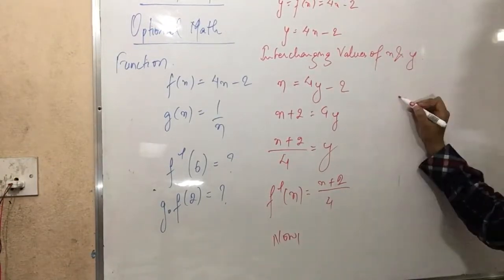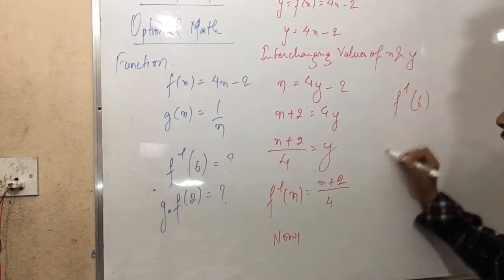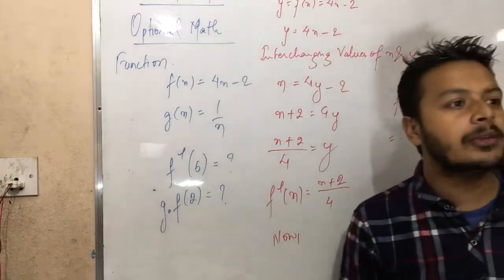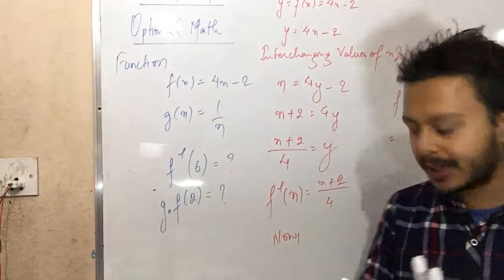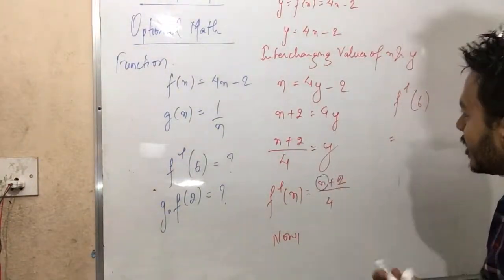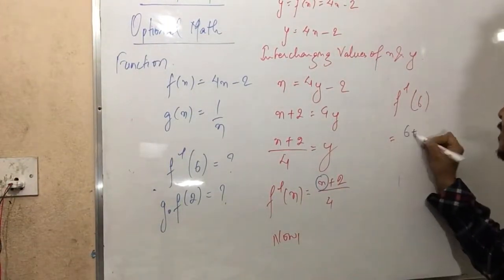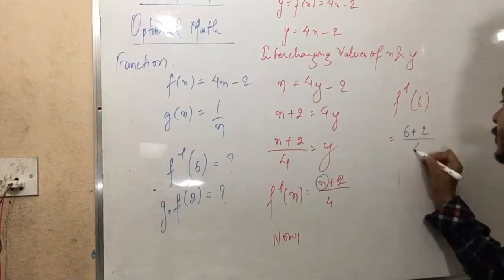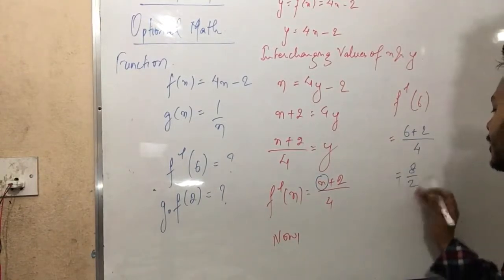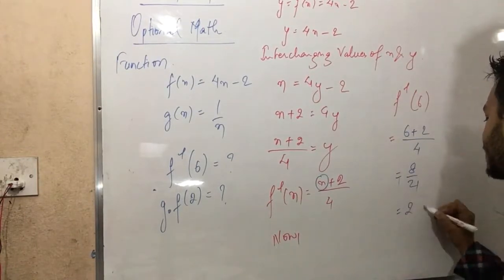Now finding f inverse of 6: substituting x = 6 into (x + 2) / 4 gives (6 + 2) / 4 = 8 / 4 = 2. So f inverse of 6 equals 2.